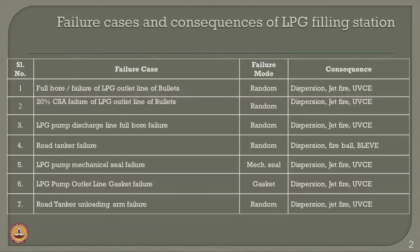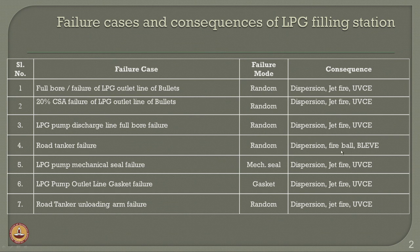In the last lecture, we discussed the different failure cases and consequences of a case study of an LPG filling station located at two different geographic places. Different failure cases were identified: full bore failure of the LPG outlet line of bullets, 20 percent cross-section area of failure, LPG pump discharge line full bore failure, road tanker failure, LPG pump mechanical seal failure, LPG pump outlet line gasket failure, and road tanker unloading arm failure. The consequences could be dispersion, jet fire, vapor cloud explosion, BLEVE, and fireball. We discussed dispersion and jet fire in the last lecture.